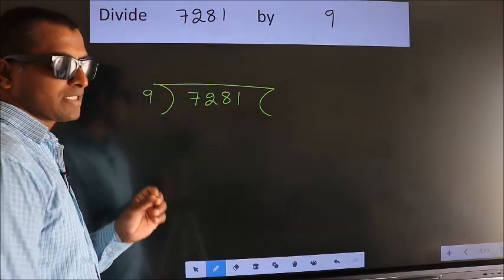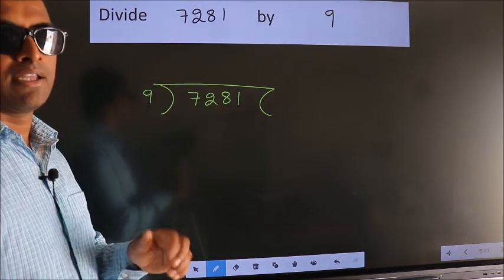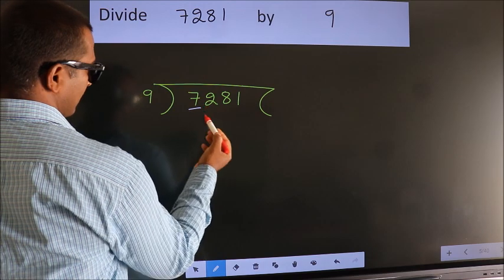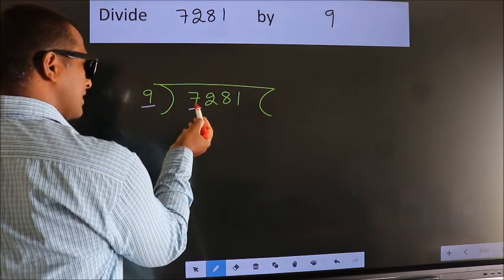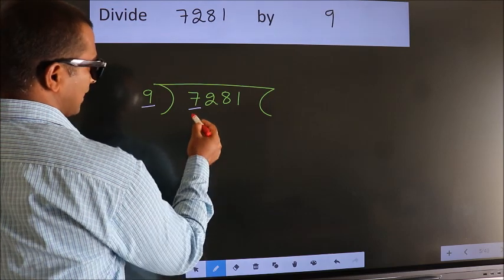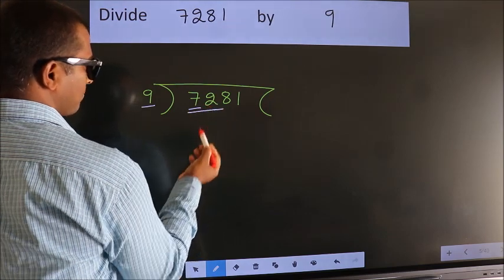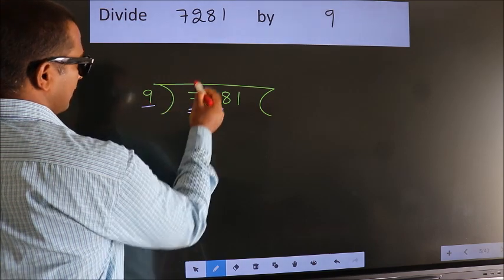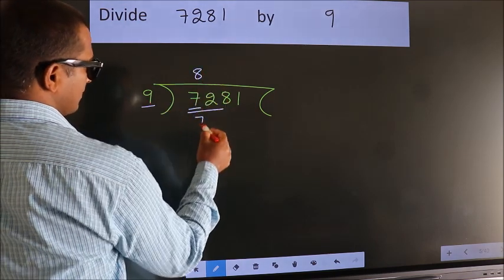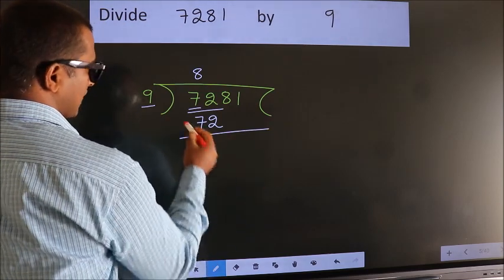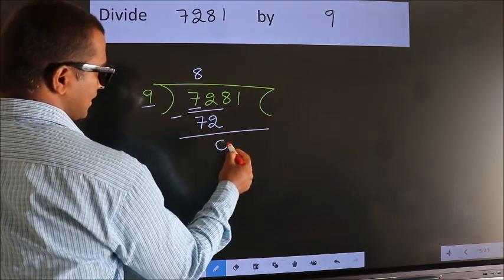This is your step 1. Next, here we have 7, here 9. 7 is smaller than 9, so we should take two numbers: 72. When do we get 72? In the 9 table. 9 times 8 is 72. Now we should subtract. We get 0.